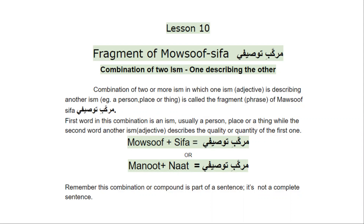In the last lesson we learned the fragment of Idafa, which is Murakkab-e-Idafi. Murakkab-e-Idafi is a combination of two ism that are related with respect to ownership or relationship.